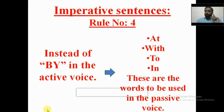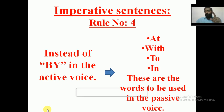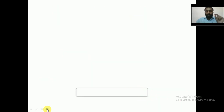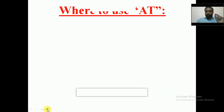So that's Rule number 4. Instead of 'by', we have four other words: at, with, to, and in. These are the words to be used in the passive voice. Let's see how and where each one works.